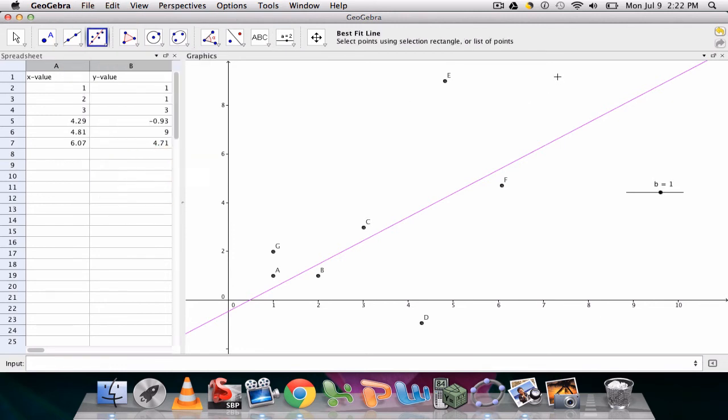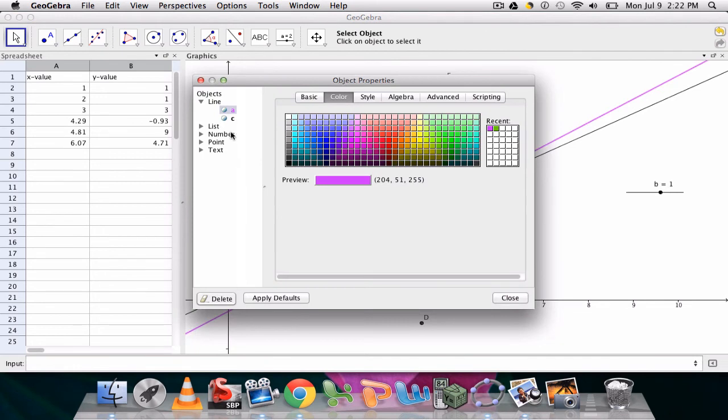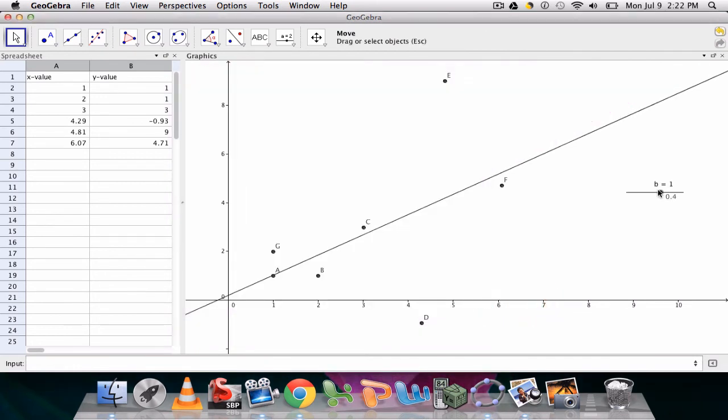These points right here, go to our object properties and just delete or hide the other one. Now as we move B, we can see how the line actually moves to understand what's happening.